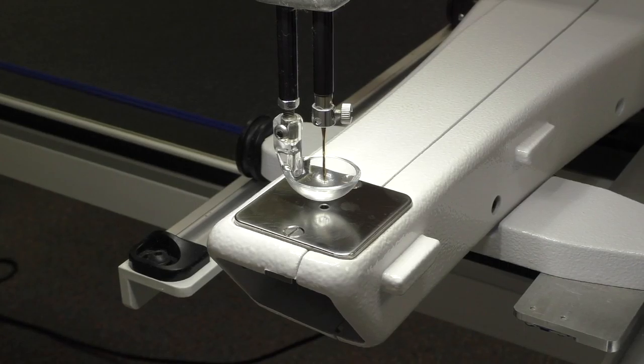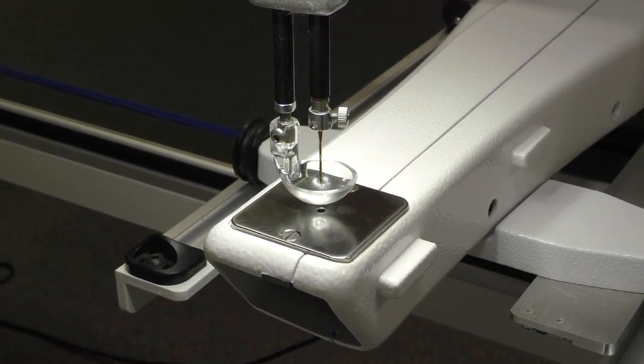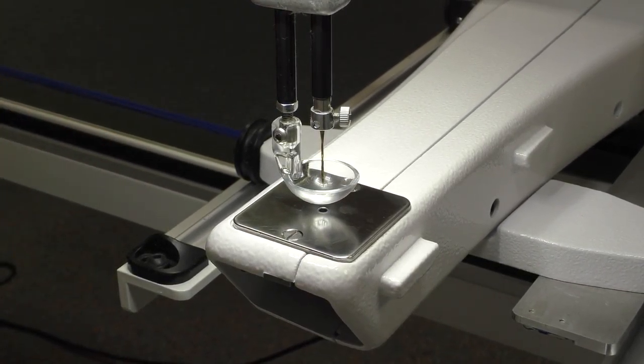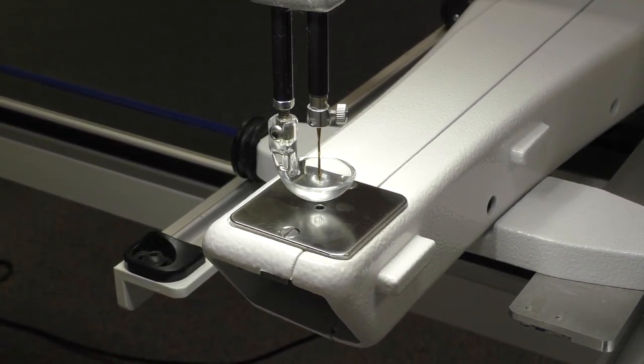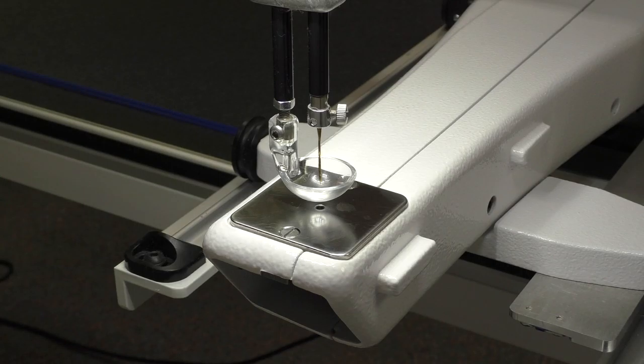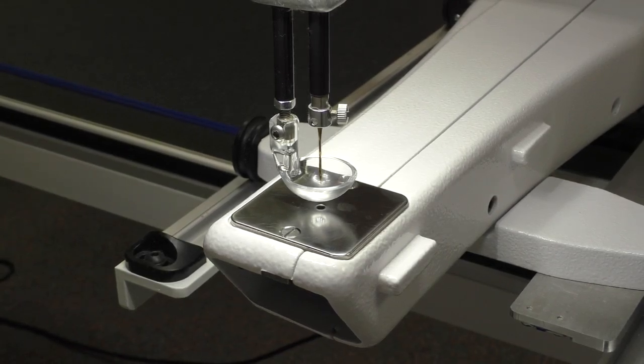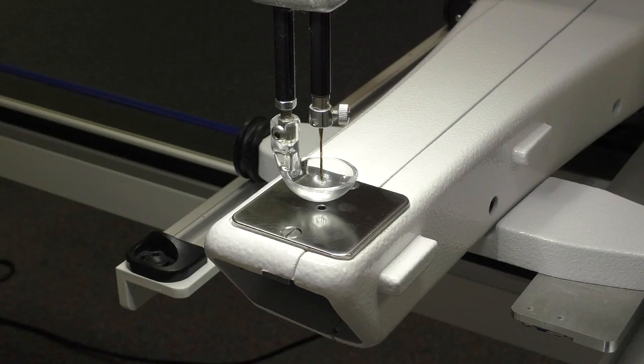Also, if your thread starts skipping or even fraying, a lot of times changing the needle will solve that problem. Also, if on the back of your quilt as you roll it, you notice that your batting is poking through, that is also usually caused by a dull or blunt needle.